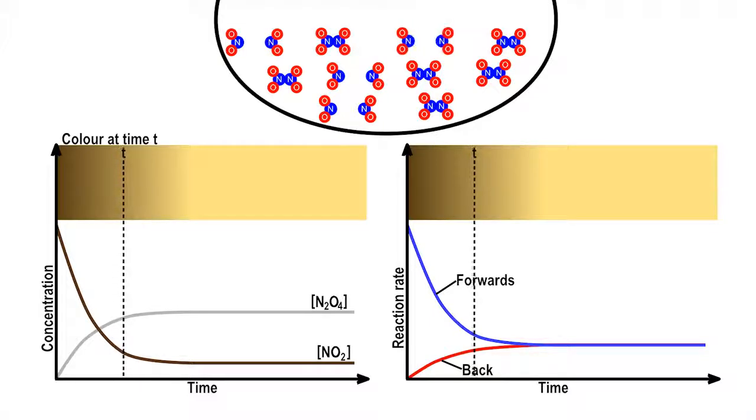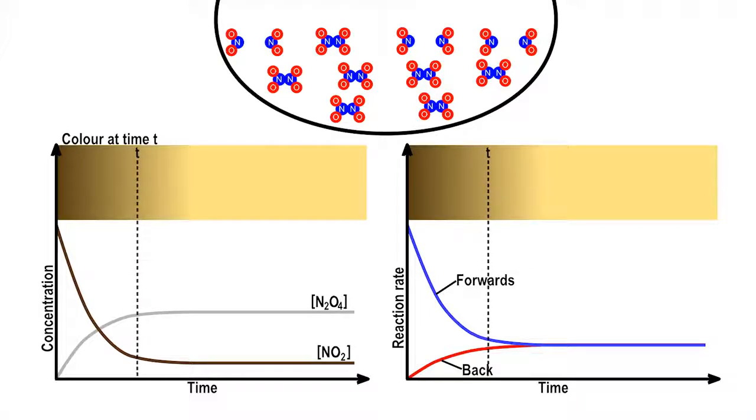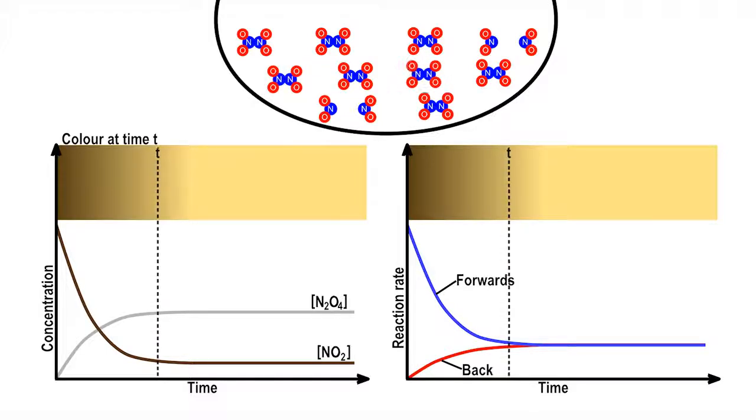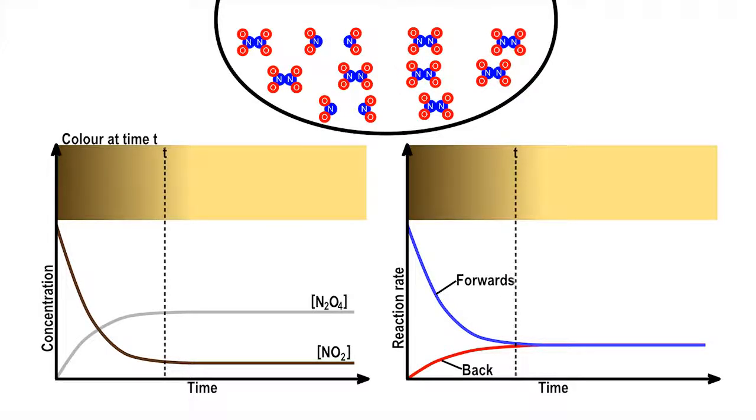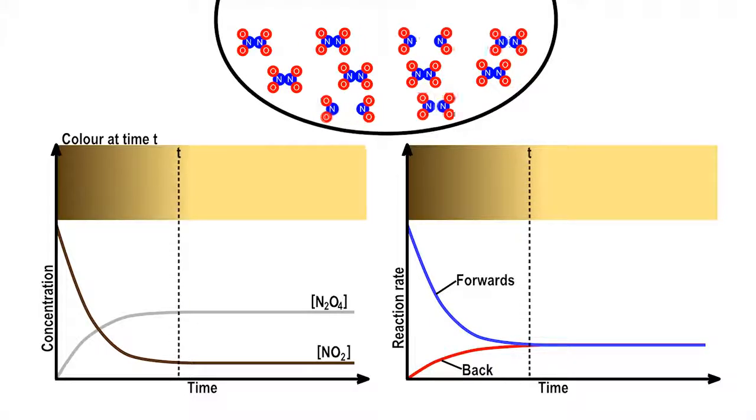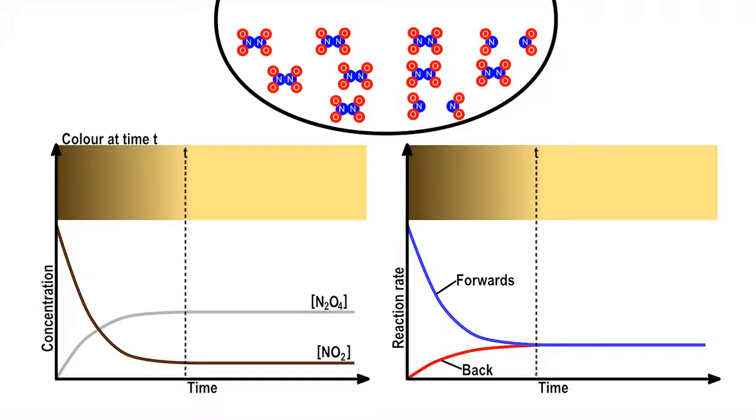However, as the concentration of N2O4 increases, so does the rate of the back reaction, as there are now more N2O4 molecules available to disassociate back into NO2. Conversely, the rate of the forward reaction decreases as the concentration of NO2 decreases.